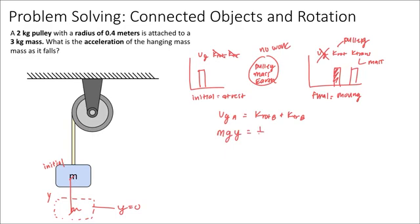The rotational kinetic energy of the pulley, this is the pulley, will be one half i times omega squared, where i is the moment of inertia of the pulley. And then the translational kinetic energy of the hanging mass would be one half mv squared.